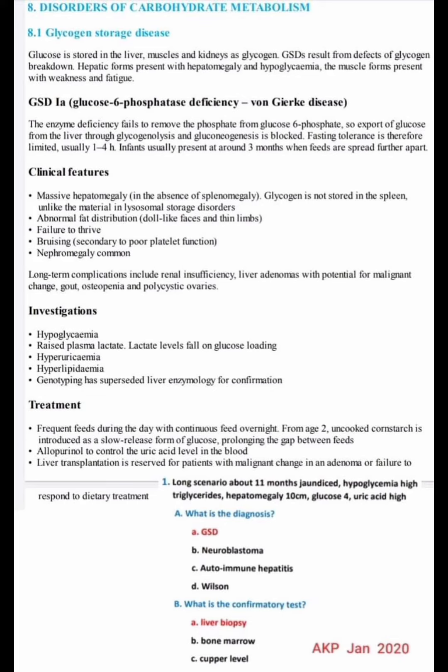There is a question that comes on AQP exams: a long scenario about an 11-month-old with jaundice, hypoglycemia, high triglycerides, hepatomegaly of 10 cm, glucose of 4, and high uric acid — so what is the diagnosis? All the features, including hypoglycemia, massive hepatomegaly of 10 cm, and high triglycerides indicating abnormal fat distribution, support a diagnosis of glycogen storage disease.